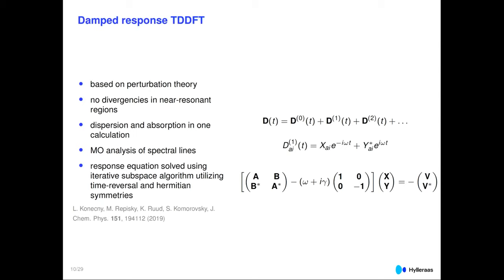Omega is the excitation frequency of interest, determined by finding the poles of the response function. An important reason for this approach: most eigenvalue algorithms work from the bottom up, starting with the lowest eigenvalues and climbing up. When going into X-ray regions with excitations up to 10,000 eV, that is an unsurmountable task. By selecting the frequency Omega corresponding to the region of interest, we can target specifically that energy range without finding all excited states below it.